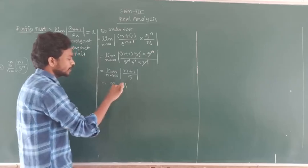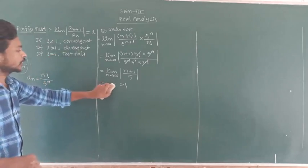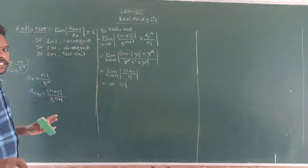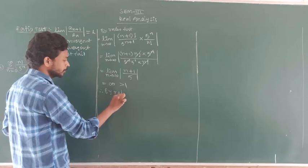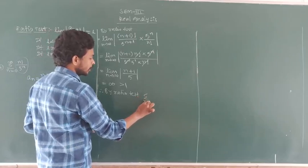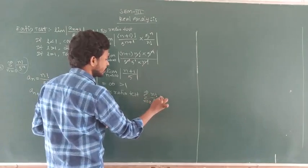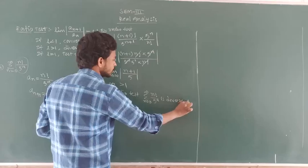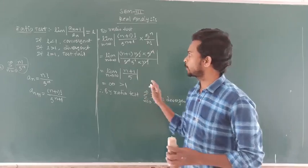It is plus infinity, and infinity is always greater than 1. Therefore, the given series is divergent. By the ratio test, the sum of n equals 0 to infinity of n factorial by 5^n is divergent.